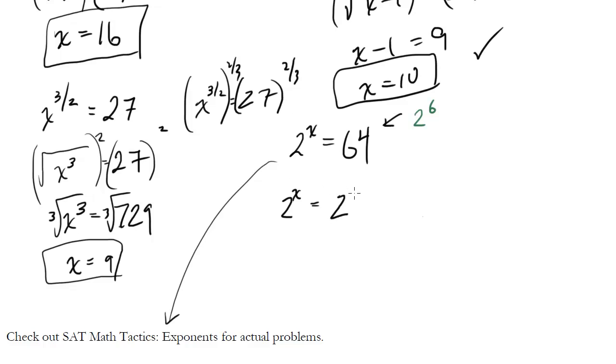So when we write this as 2 to the 6, we see, oh well, wait a minute. Now that my bases are the same, I just look at my exponents. In order for this side to equal this side, this is going to have to equal 6 as well. So in this particular example, x will be 6. And that's a very simple example of what you'll see on the SAT. Let's leave the more complex examples of exponent and radical problems to the SAT Math Tactics series.